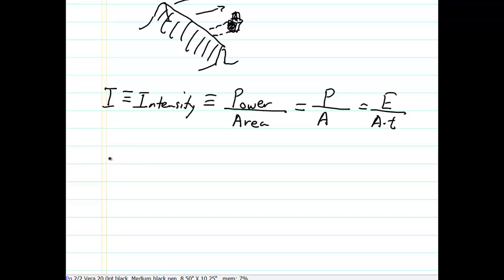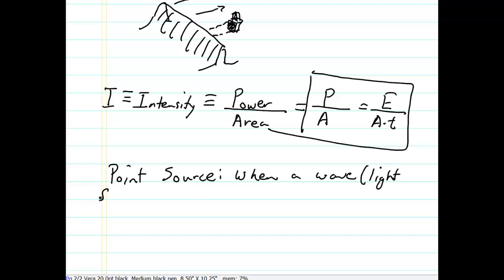Now, with that being said, sometimes light comes out from a point source. When a wave, light for instance, originates from a point source...